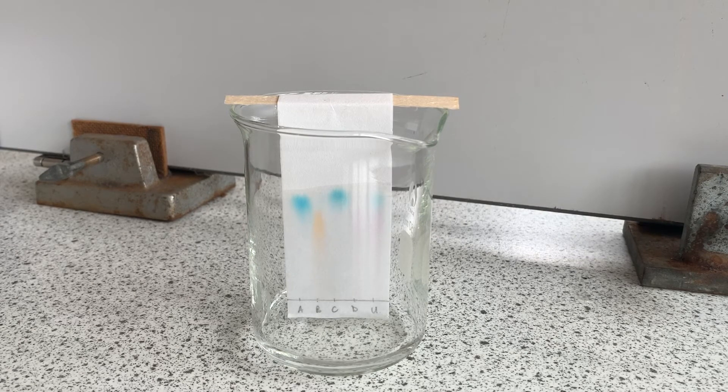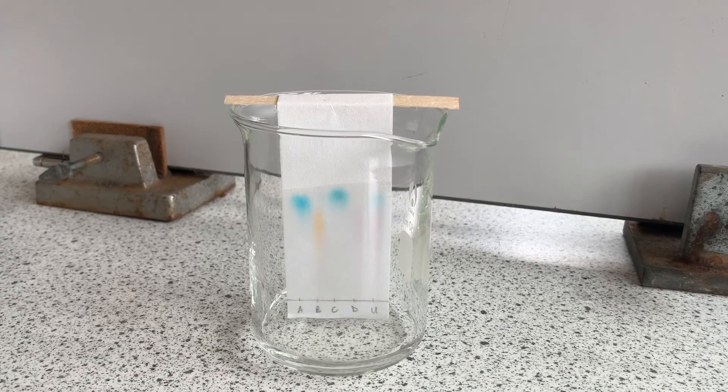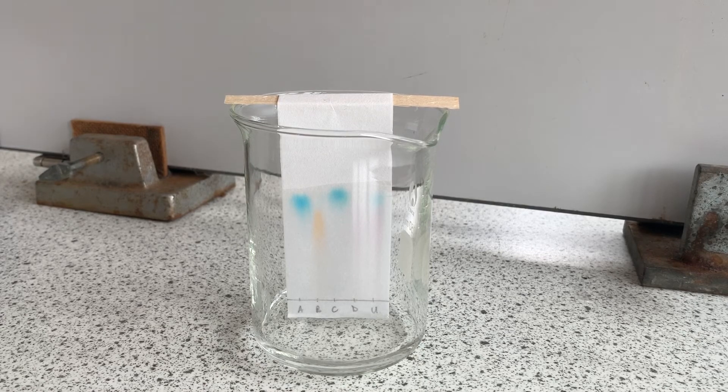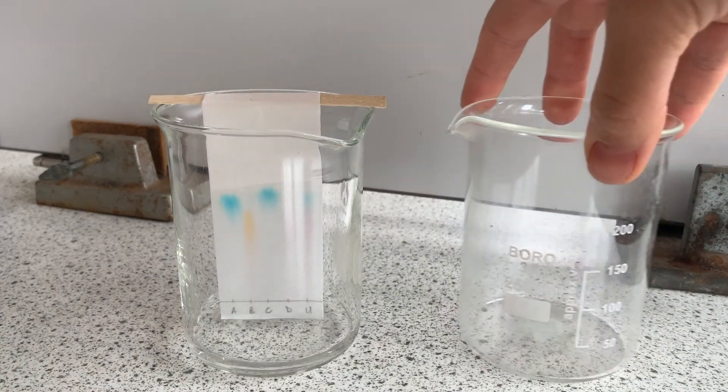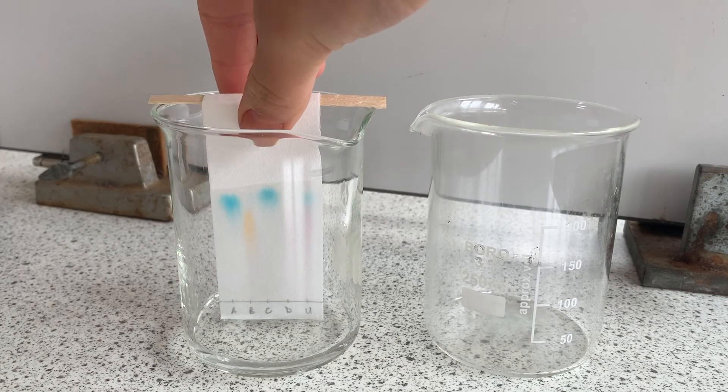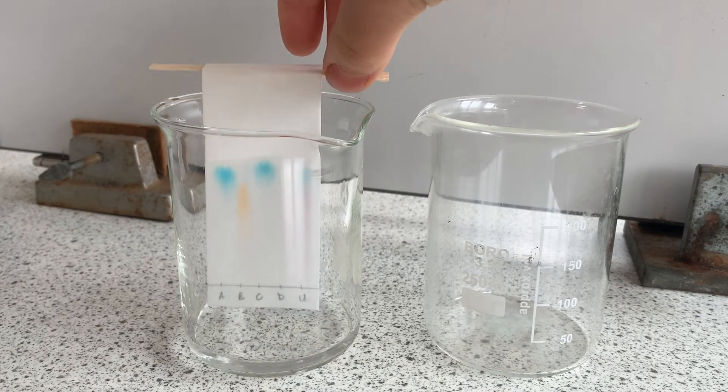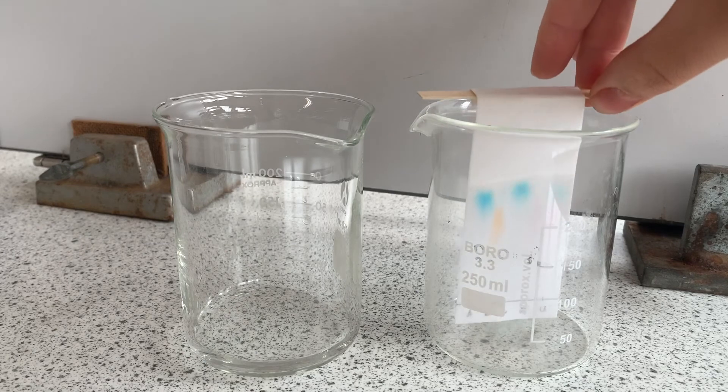Once the different spots have travelled up the paper to these different distances and before the solvent reaches the top of the paper take it out and suspend it into an empty beaker to dry. It's a good idea before the paper dries out completely to mark the solvent front before you can't see it anymore.